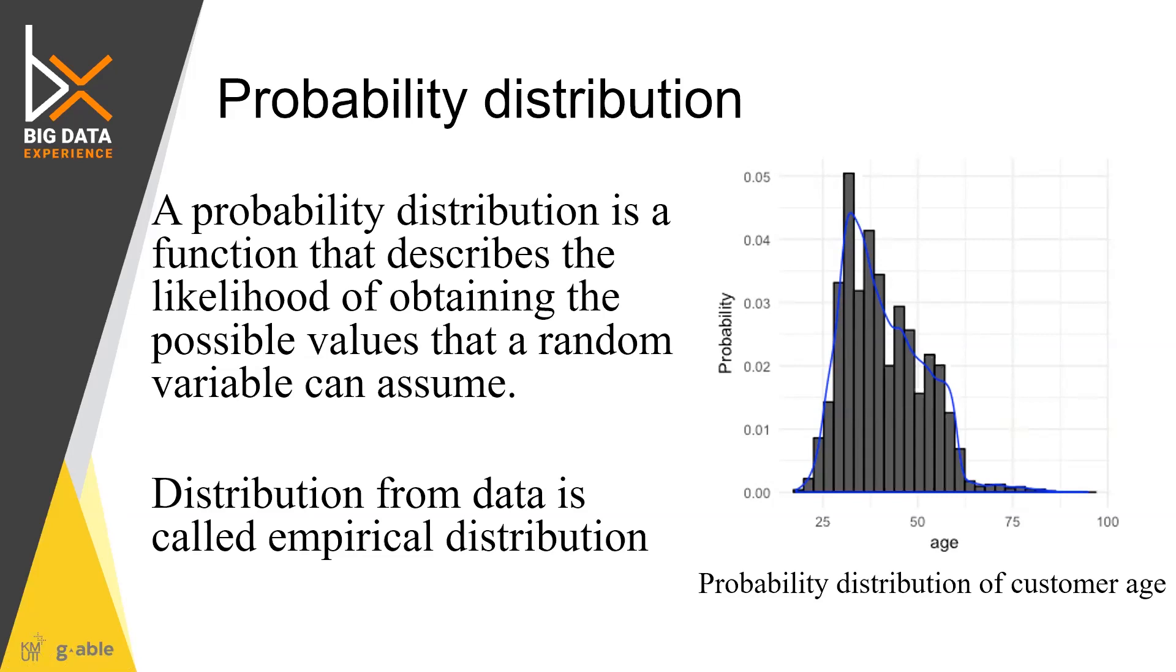This is in contrast to the theoretical distribution like normal distribution or Poisson distribution. Those are theoretical distributions. It is hypothesized to be, it is used to explain the process. So it means that there exists explicit functions, explicit functions to explain those behavior. While for empirical distribution, you got only your data to explain how the data spread.